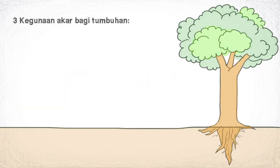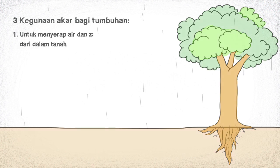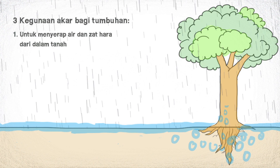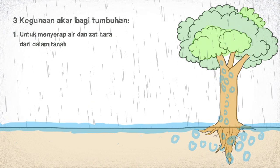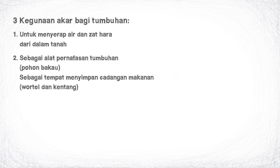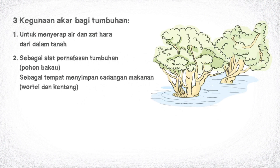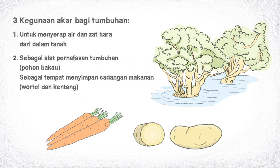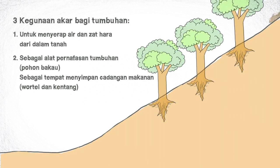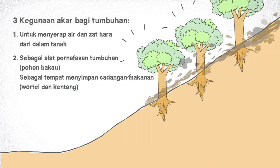Kegunaan akar bagi tumbuhan ada tiga, yaitu untuk menyerap air dan zat hara dari dalam tanah, sebagai alat pernafasan tumbuhan contohnya pada pohon bakau, sebagai tempat menyimpan cadangan makanan contohnya pada tanaman wortel dan kentang, dan untuk memperkokoh tumbuhan.